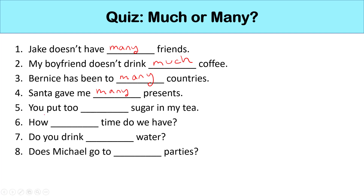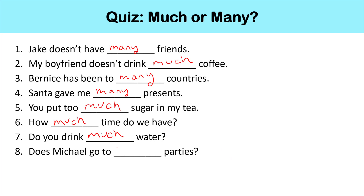Number five: you put too much sugar in my tea — sugar is uncountable, so we use much. Number six: how much time do we have? — time is uncountable. Number seven: do you drink much water? — water is uncountable, so we use much. And finally, number eight: does Michael go to many parties? — parties is countable, so we use many.